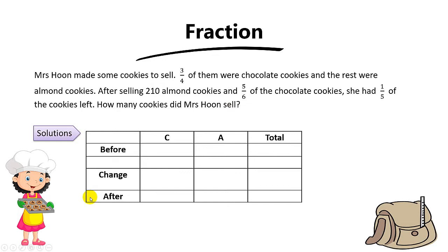Let's draw a table. We have C for chocolate, A for almond, and total. Then we have before, change, and after. At first, three-quarters are chocolate. Can you guess the ratio? The answer is 3 to 1 to 4, because out of 4 units, 3 are chocolate and 1 is almond.